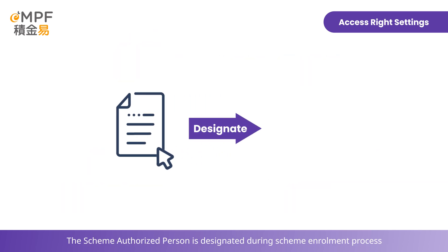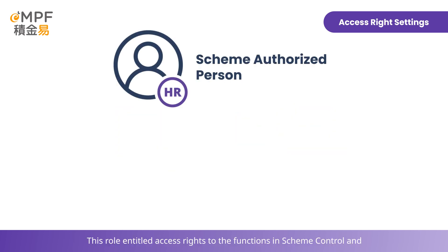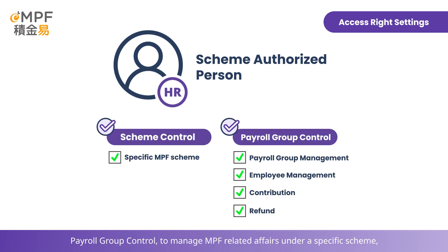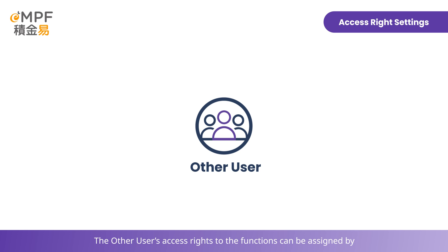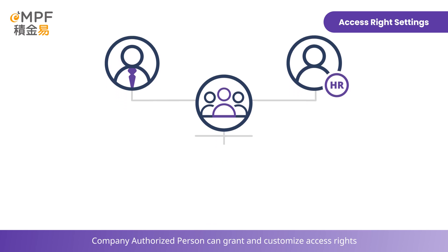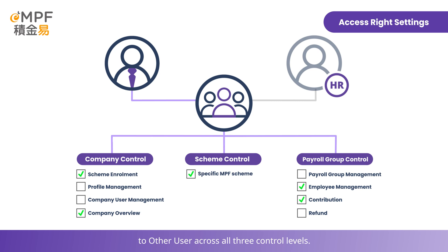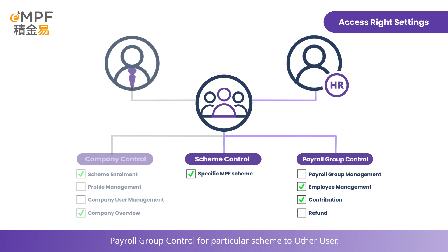The scheme authorized person is designated during the scheme enrollment process to manage a specific MPF scheme. This role entitles access rights to the functions in scheme control and payroll group control to manage MPF-related affairs under a specific scheme, including arranging access rights to users in a particular scheme and handling scheme administrative instructions. The other user's access rights can be assigned by the company authorized person and the scheme authorized person. This arrangement of different roles and access levels has facilitated the management of MPF.